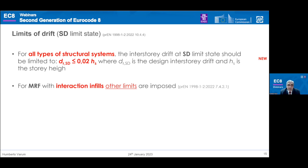Regarding drift limits for the significant damage limit state, a maximum drift of 2% is imposed for all structural systems. This new limit will help solve many design problems, help control structural design, and also help control soft story mechanisms in some cases — as also noted by Professor Plumier for moment-resisting frames.